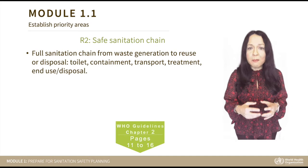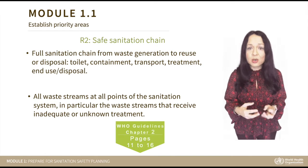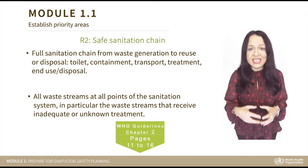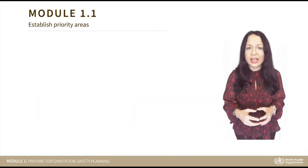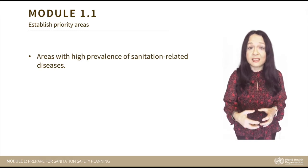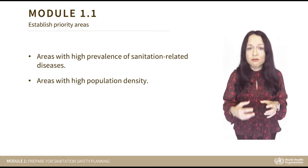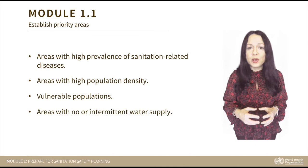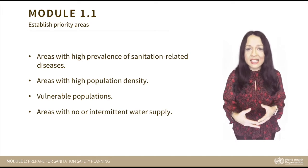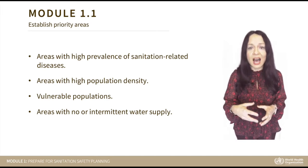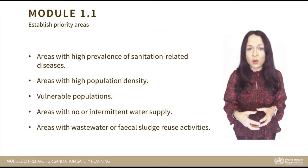Furthermore, we must take into account all waste streams at all points of the sanitation system, in particular the waste streams that receive inadequate or unknown treatment. You should also consider areas with high reported or suspected sanitation-related diseases, areas of high population density, vulnerable populations, areas with no or intermittent water supply service which require supply from potentially unsafe water sources, and areas with high formal or informal wastewater reuse activities.